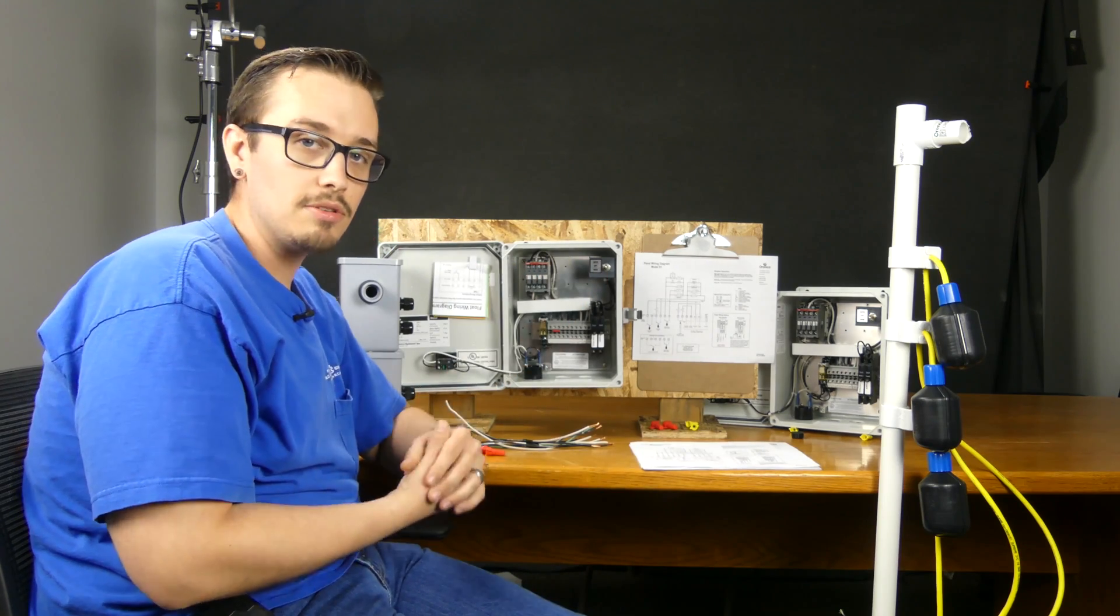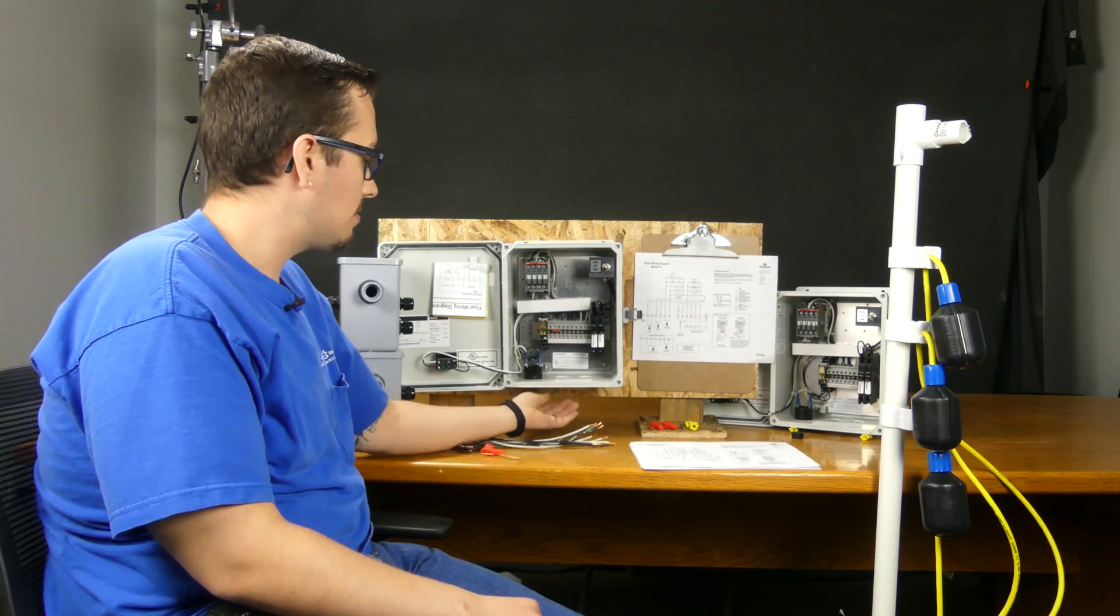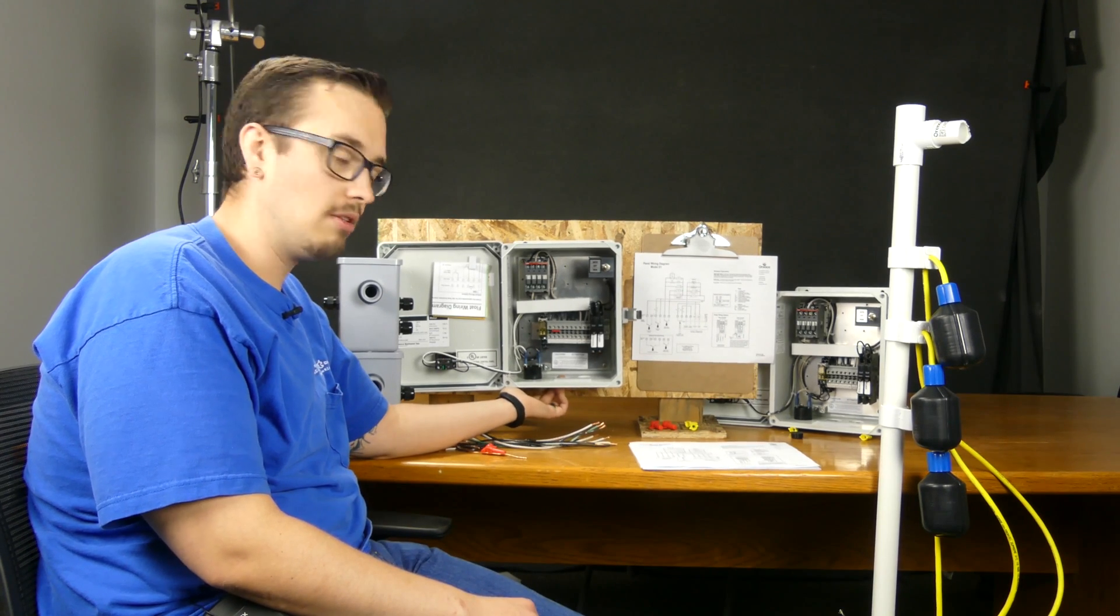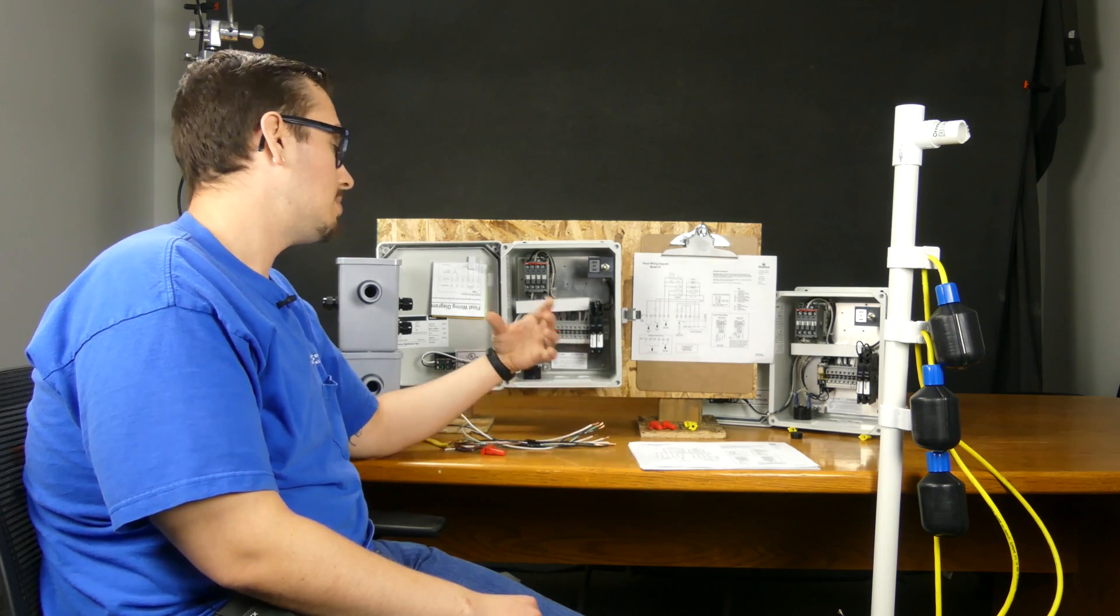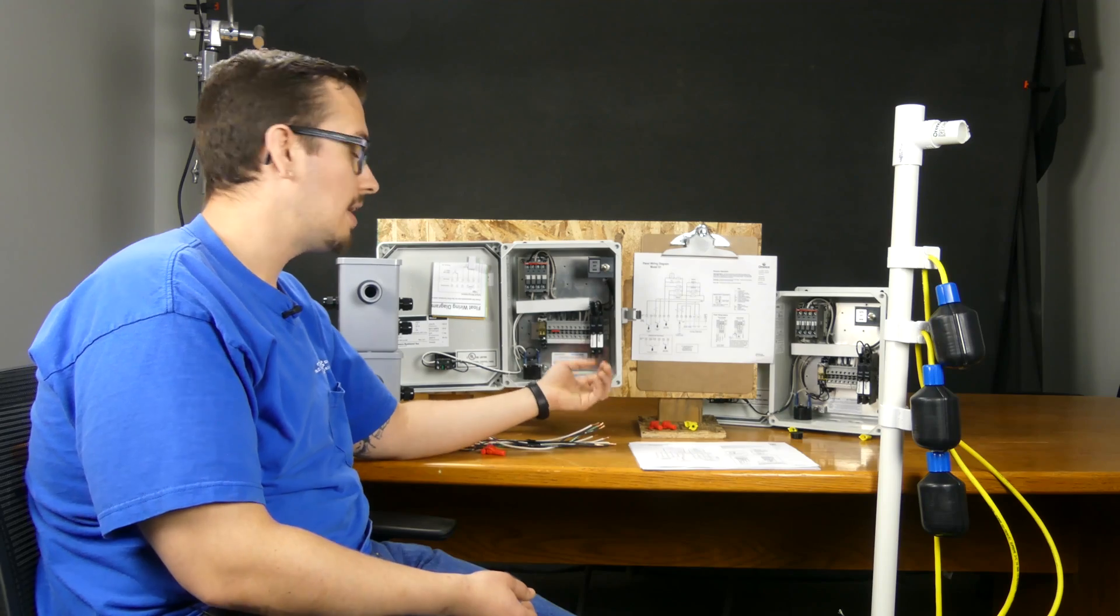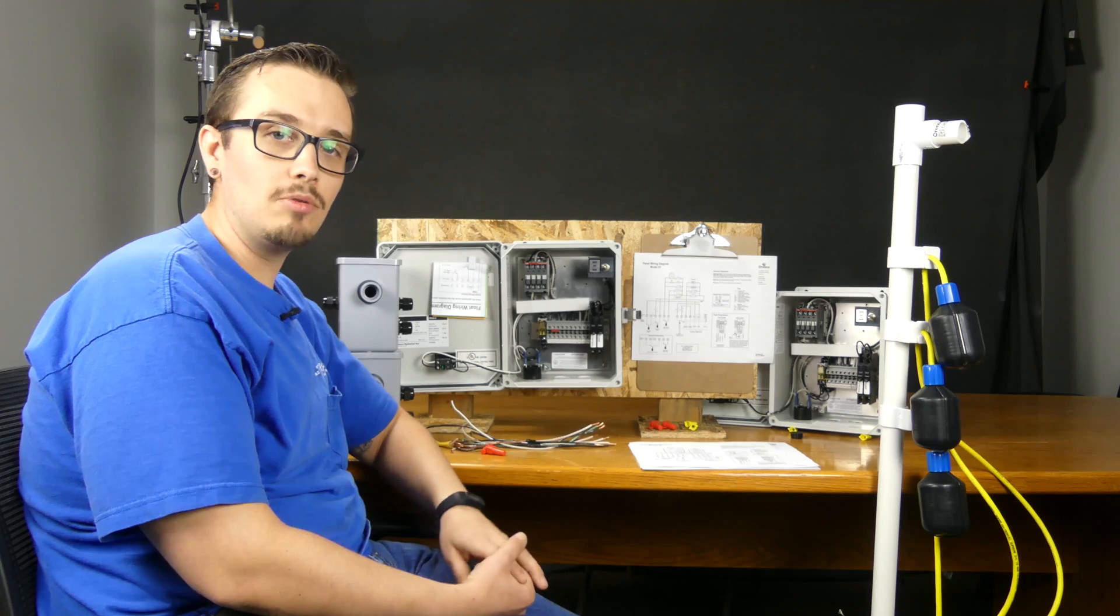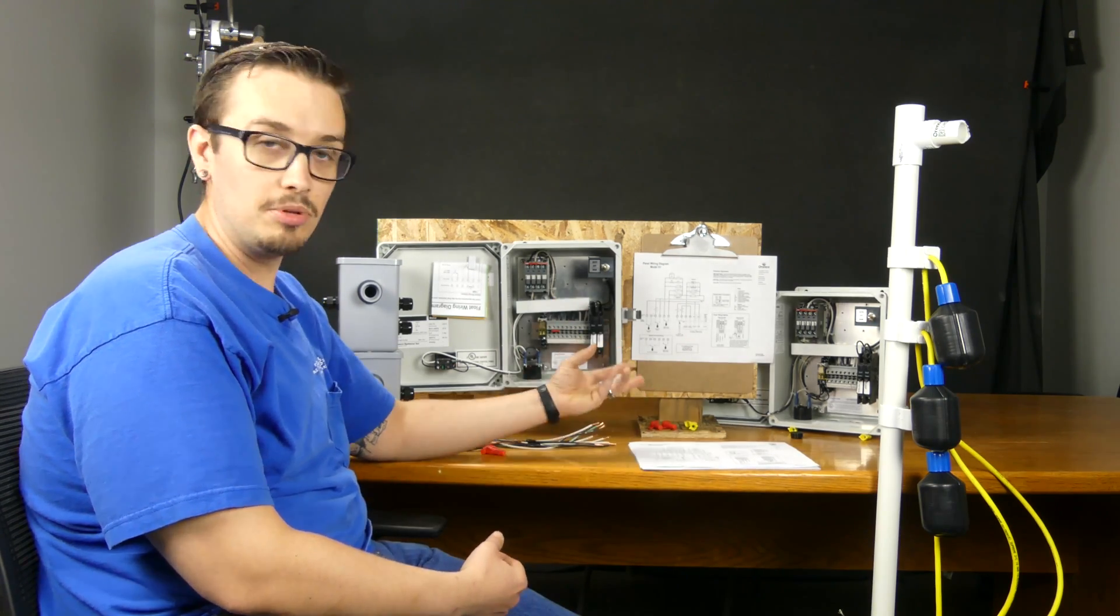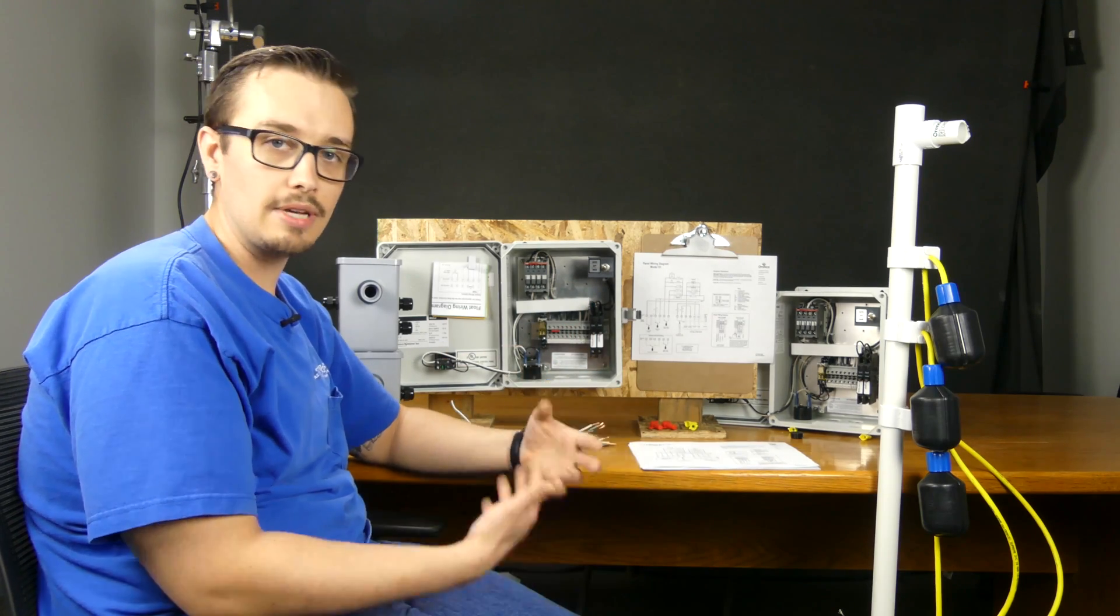Before we get started, I just wanted to mention that we will be running the wires directly through these holes in the bottom of the panel. Keep in mind that is not the proper way to do it, but due to the wide variety of codes on seal-offs and the proper ways to enter a panel, we're not going to show that part because I wouldn't want to mislead anyone. From area to area it's going to change, so we're just going to for simplicity sake run the wires straight through the bottom and not use any conduit or adapters or anything of that sort.